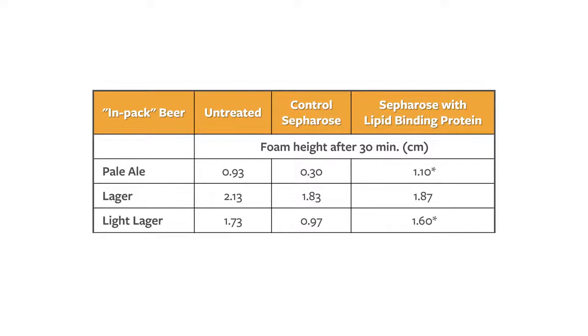Now the next one, the lager, does not improve by passing through this column. But some of the other ones do. So this is a very handy dandy way, if you've got a laboratory, to interpret whether you've got a foam negative problem with your beer.